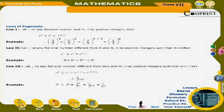Law 2: Let x be any rational number different from 0, and m and n be positive integers such that m > n. Then x^m ÷ x^n = x^(m−n). Example: 5⁶ ÷ 5³ = 5^(6−3) = 5³.